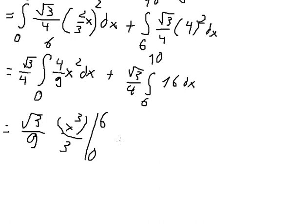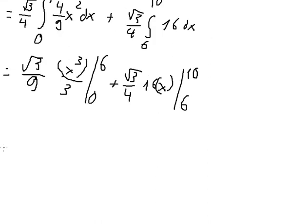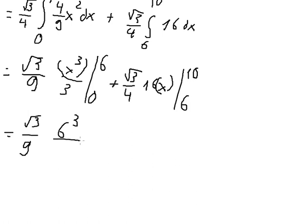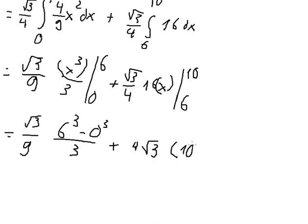Section 2 gives square root of 3 times 4, evaluated with 16x from 6 to 10. Plugging in: 6 cubed minus 0 cubed over 3, plus square root of 3 times 4 times (10 minus 6). Calculating everything, the final answer is 24 times the square root of 3.